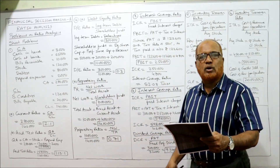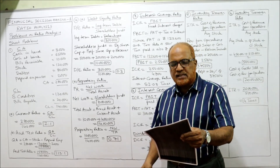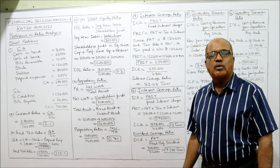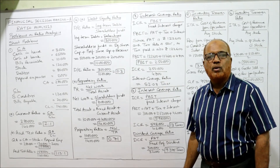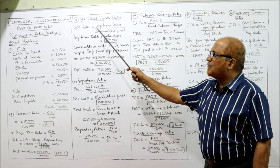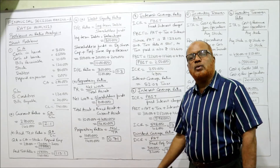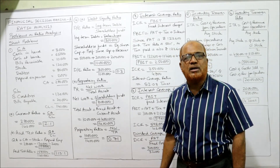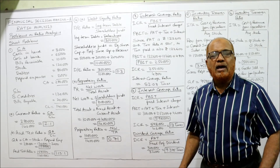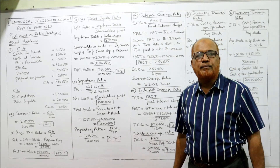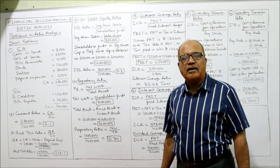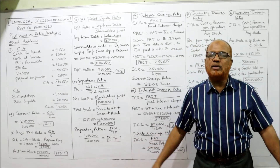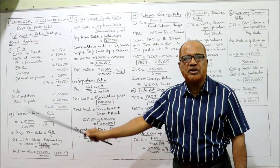Now come to the second short problem: from the following particulars, calculate debt equity ratio and proprietary ratio. The formula for debt equity ratio is long term debt divided by shareholders fund. You should say, without a blink of an eye, that debt equity ratio means long term debt divided by shareholders fund.